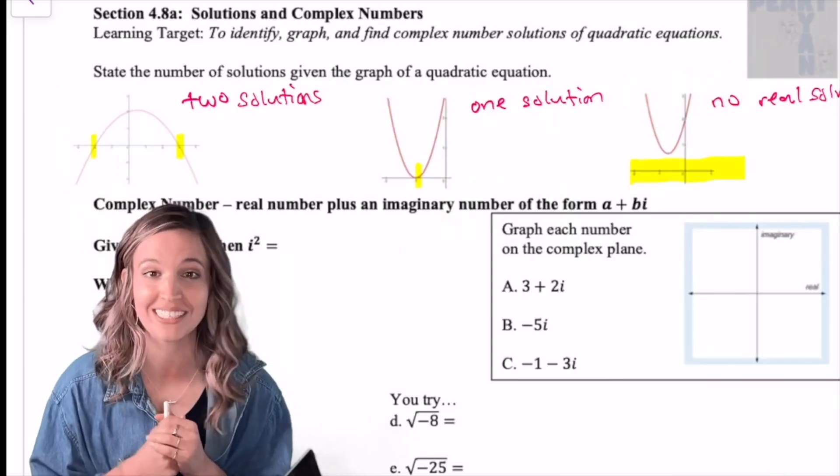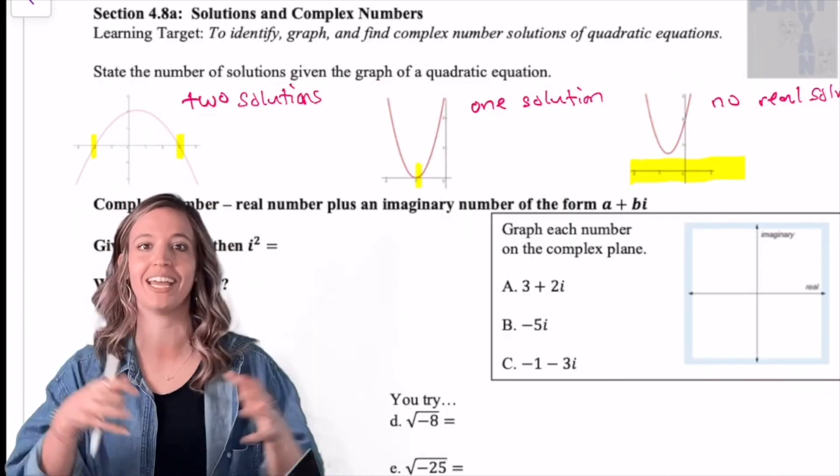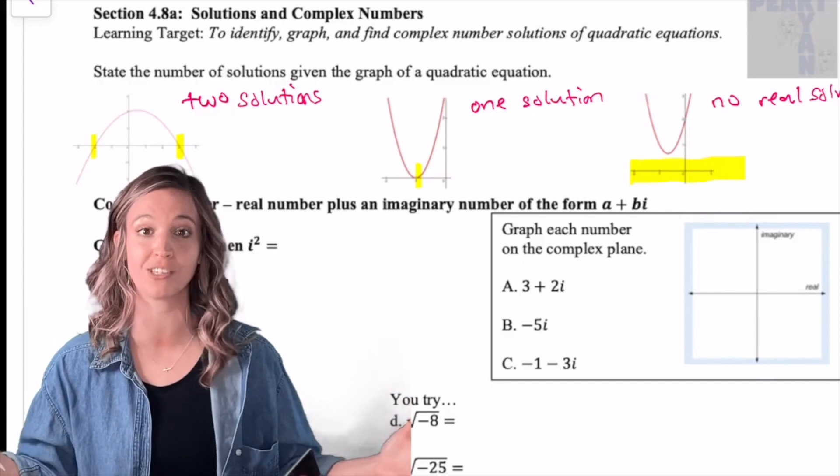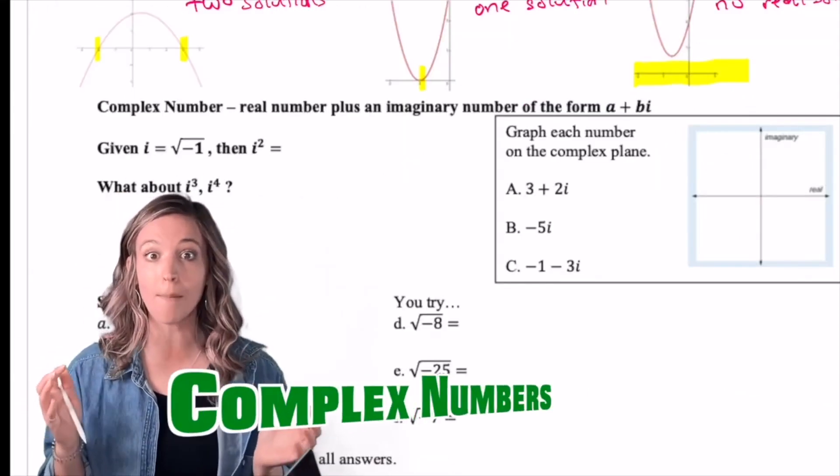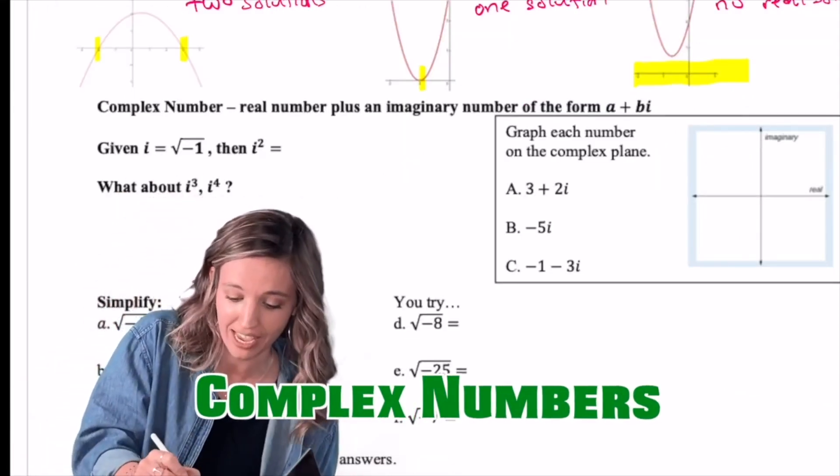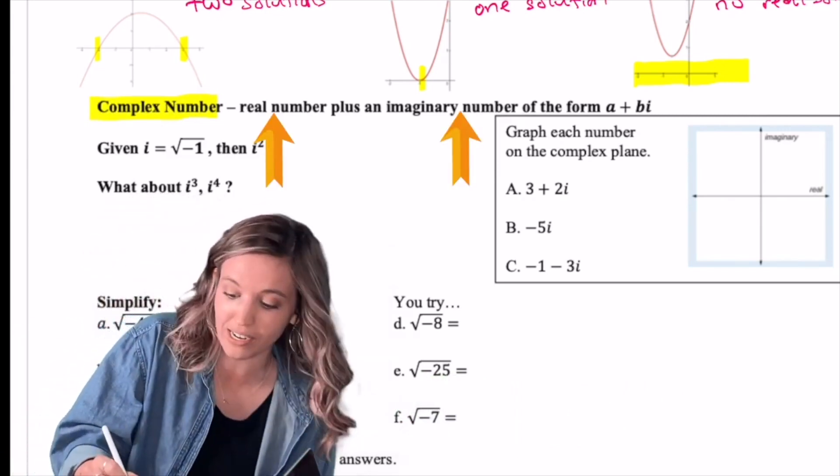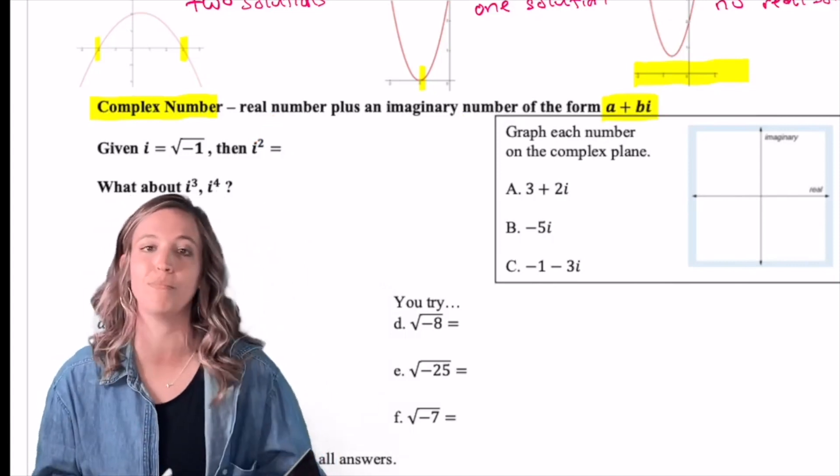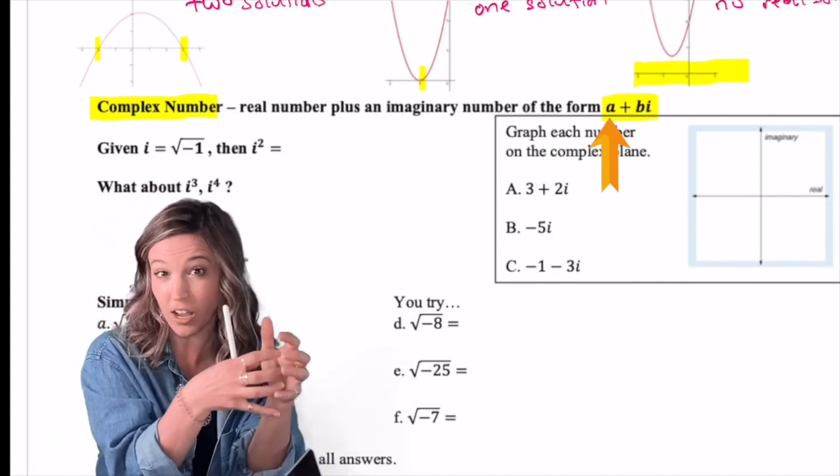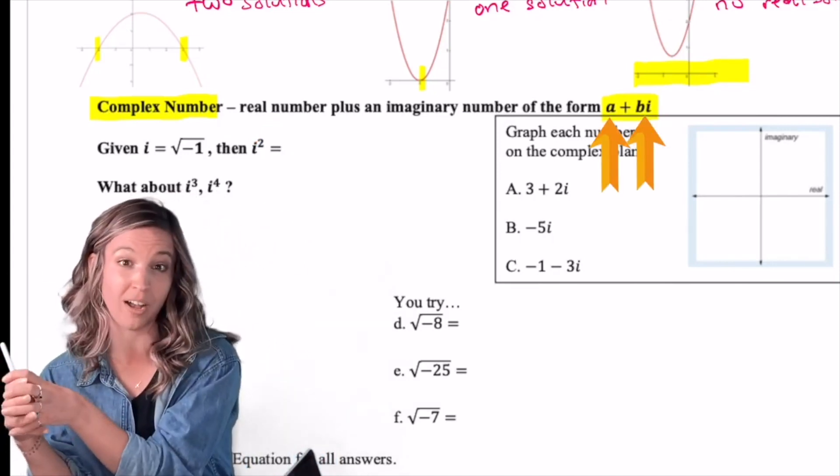Imaginary! So we're now stepping out of the real number land and stepping into imaginary numbers. So this is where this idea of a complex number comes into play. Now a complex number is a real number plus an imaginary number and it's written in this form a plus bi.